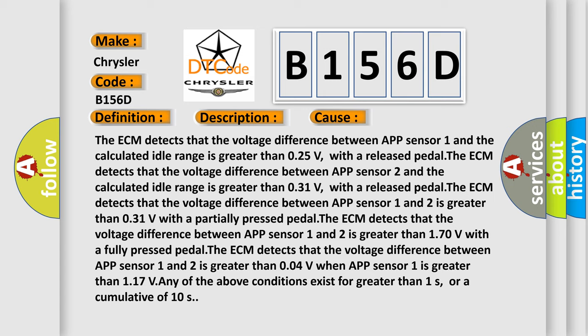With a fully pressed pedal, the ECM detects that the voltage difference between APP sensor 1 and 2 is greater than 0.04V when APP sensor 1 is greater than 1.17V. Any of the above conditions exist for greater than 1 second or a cumulative of 10 seconds.